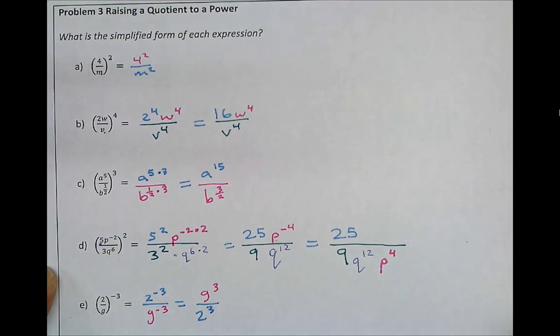Now we simplify by first keeping the g to the power of 3 as it is. But multiplying this 2 to the power of 3 out, 2 times 2 times 2 is 8.